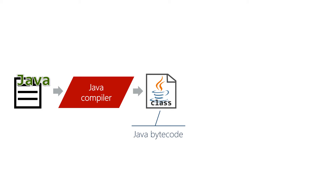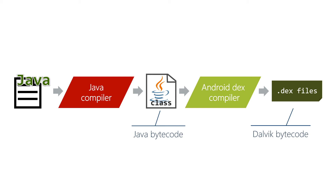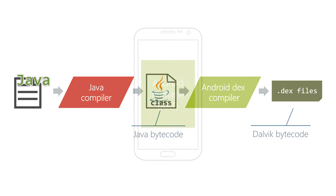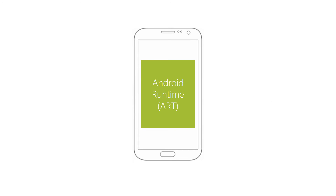If you were writing an Android application in Java, your code would be compiled into Java bytecode by the standard Java compiler included in the JDK. That Java bytecode is then translated into Android's proprietary bytecode format called Dalvik bytecode, and this is stored in .dex or DEX files.